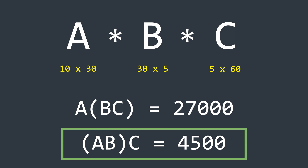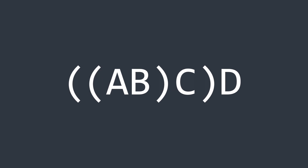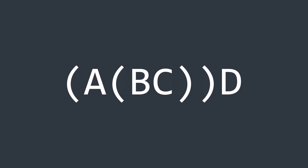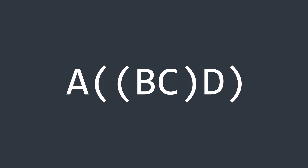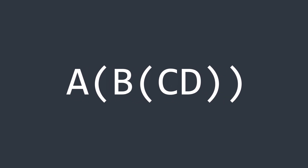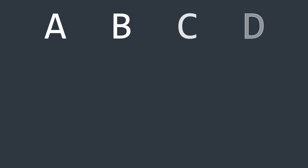Thus, matrix chain multiplication is a problem where we need to find the most optimal order of multiplication, rather than actually multiplying the matrices themselves. If we attempt to solve this using brute force, it becomes exponentially expensive due to the large number of possible combinations. Instead, we will use dynamic programming to efficiently determine the optimal order of multiplication.